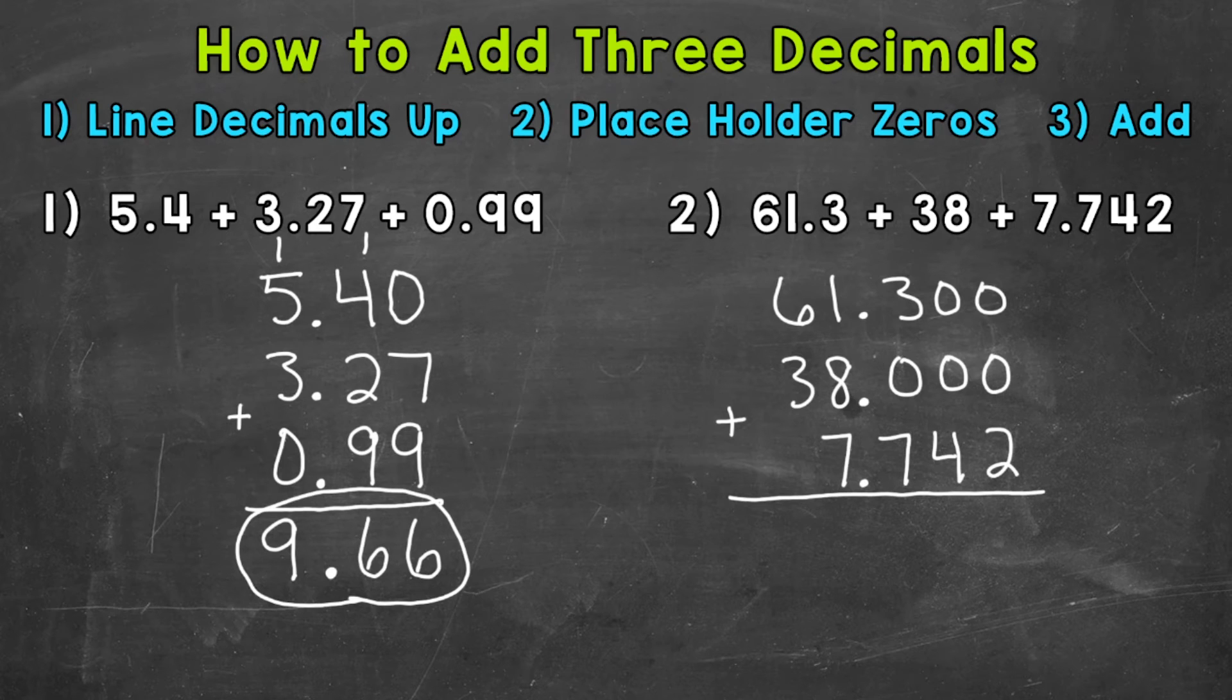So start with the thousandths. We have 0 + 0 + 2, that's going to give us 2. Now for the hundredths, 0 + 0 + 4, that gives us 4. Now the tenths, 3 + 0 + 7, that gives us 10. So we put our zero and regroup or carry the one.